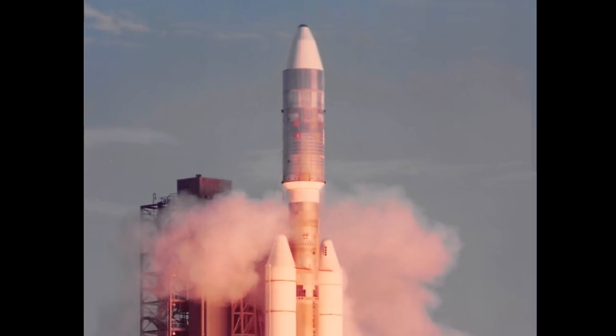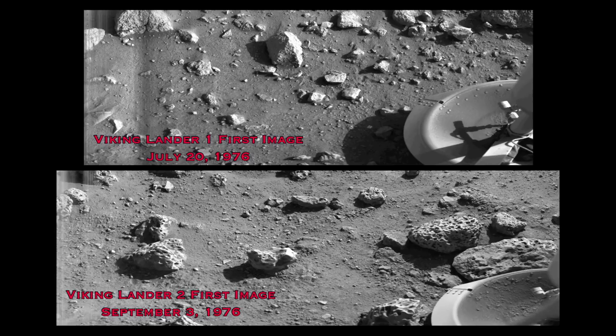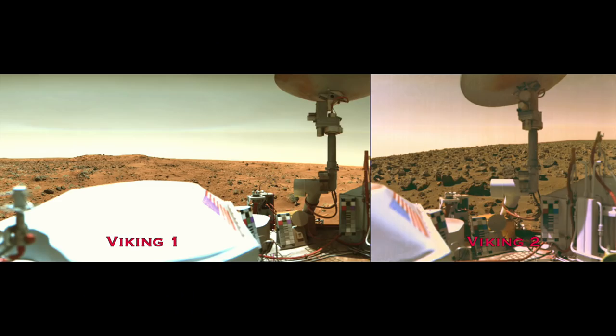After nearly a year cruising to Mars, Viking 1 and Viking 2 landed successfully and became the first spacecraft to return detailed information from the surface of the Red Planet. The Viking landers were designed and built by Martin Marietta, now part of Lockheed Martin.